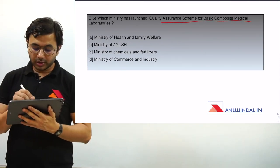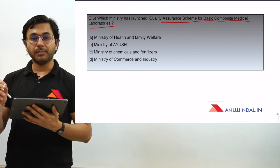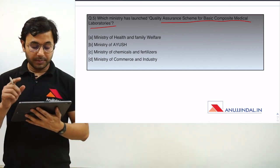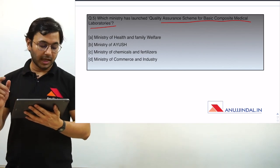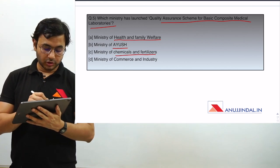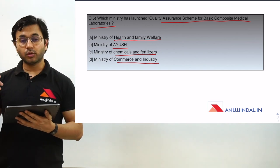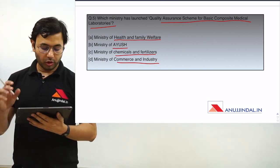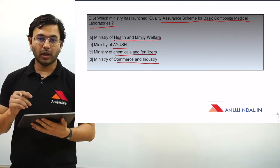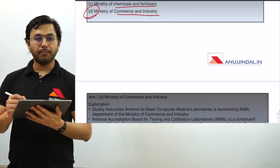Let's come to the next question: which Ministry has launched the Quality Assurance Scheme for Basic Composite Medical Laboratories? This is a very confusing question, and keep in mind it can specifically be asked in the exam. The options are: A) Ministry of Health and Family Welfare, B) Ministry of Ayush, C) Ministry of Chemicals and Fertilizers, D) Ministry of Commerce and Industry. I would like you to answer it before I do — put your answers in the comment section below. The answer is very unexpectedly D — Ministry of Commerce and Industry.